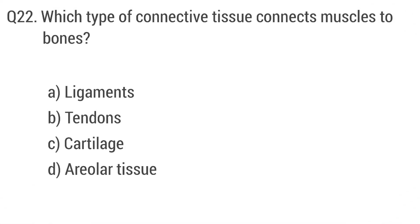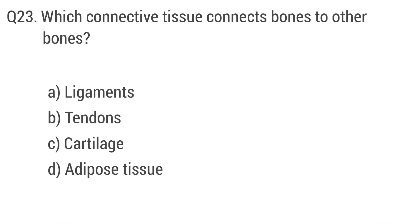Question 22: Which type of connective tissue connects muscles to bones? The right answer is option B: tendon. Question 23: Which connective tissue connects bones to other bones? The right answer is option A: ligaments.